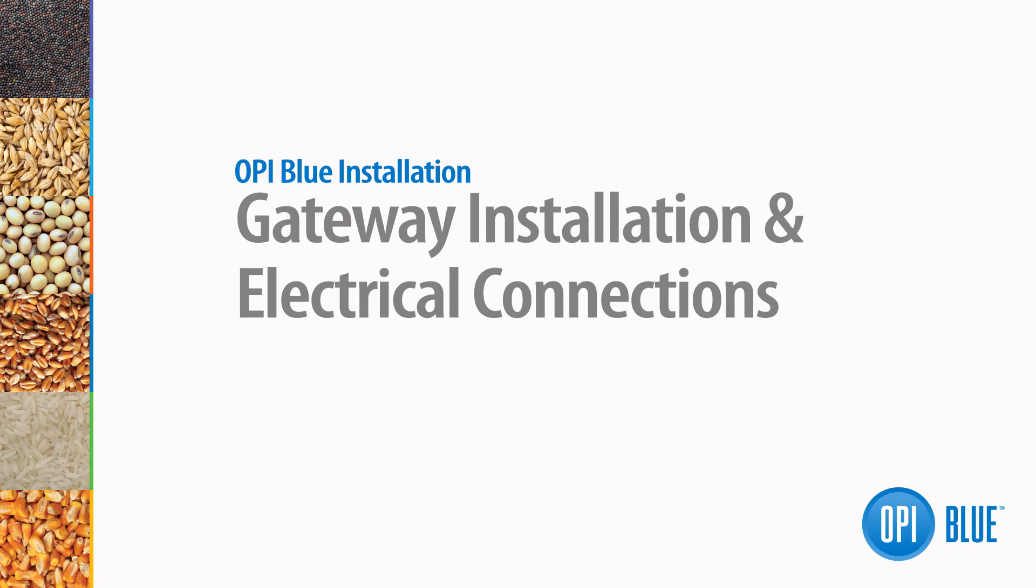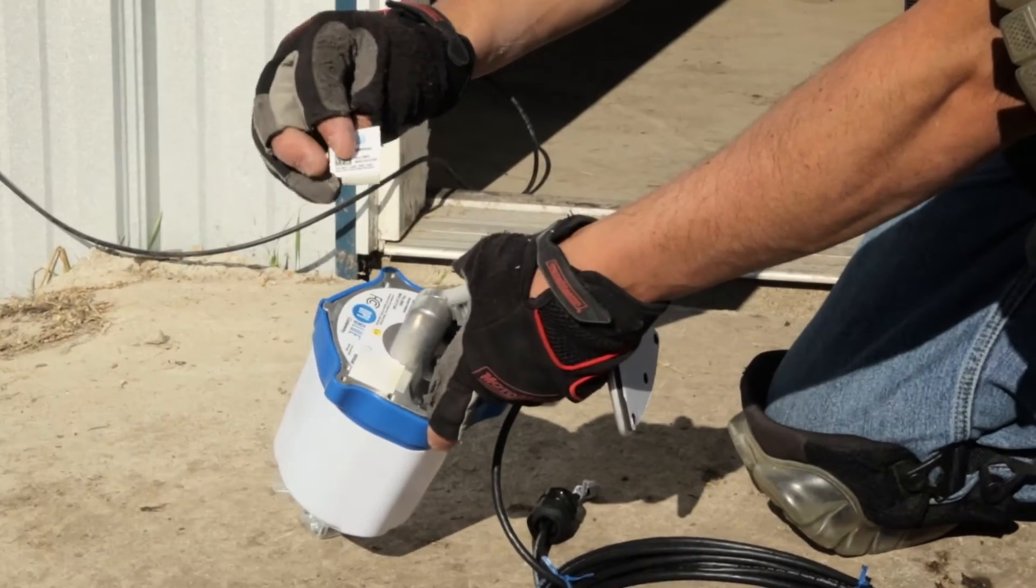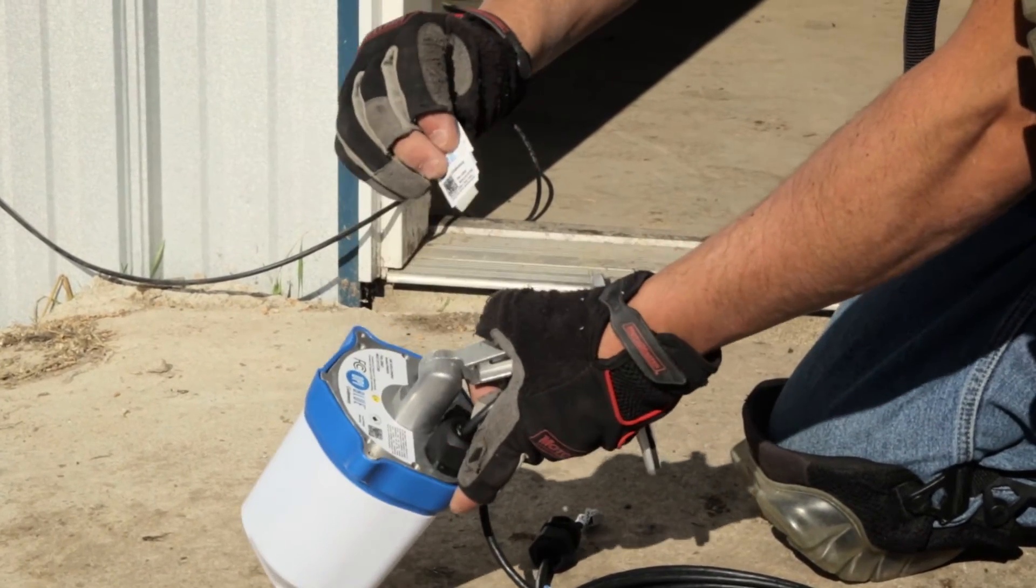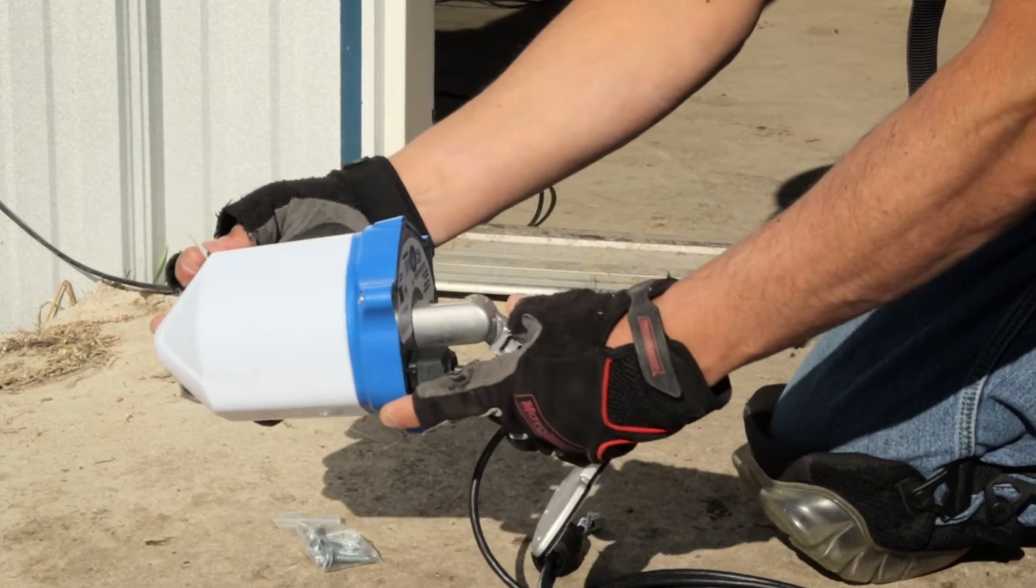You're now ready to install your PowerPanel and Gateway Node. On the bottom of all Gateway Nodes, there are two tabbed stickers that contain the MAC address and PIN number for each of these units.